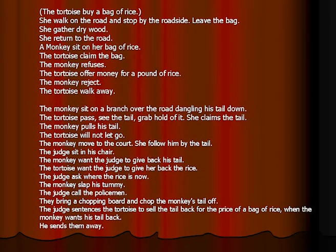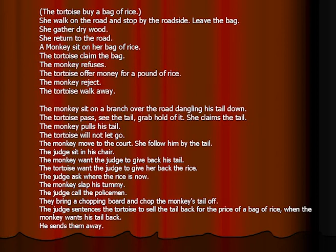So we have: the tortoise buying a bag of rice; she walked on the road and stopped by the roadside, leaving the bag; she gathered dry wood; she returned to the road; a monkey sits on her bag of rice; the tortoise claimed the bag; the monkey refuses; the tortoise offers money for a pound of rice; the monkey rejects; the tortoise walks away. That's the first scene with the first actions.